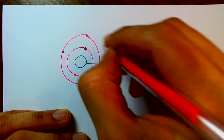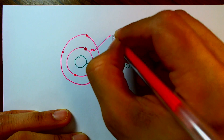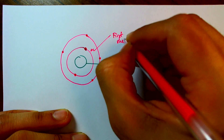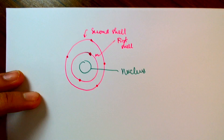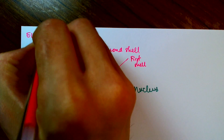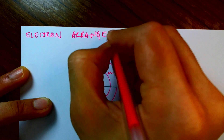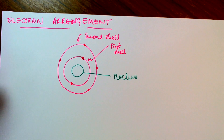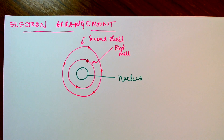The electrons are arranged in things called shells. This inside one we call the first shell, and this one we call the second shell. So what we're talking about in this video is electron arrangement. The shells tell you how fast the electrons are moving, or how much energy they have.